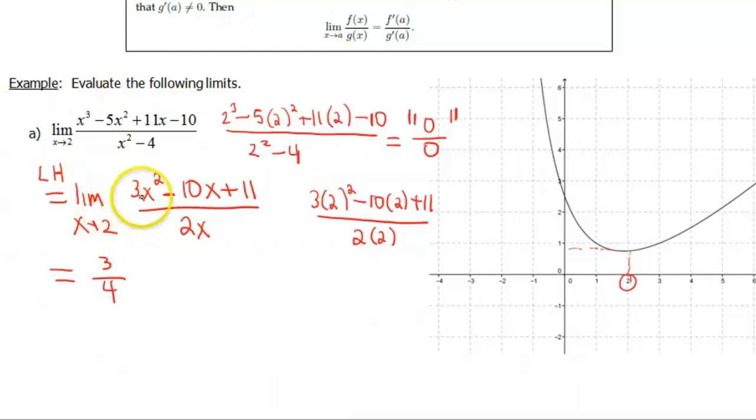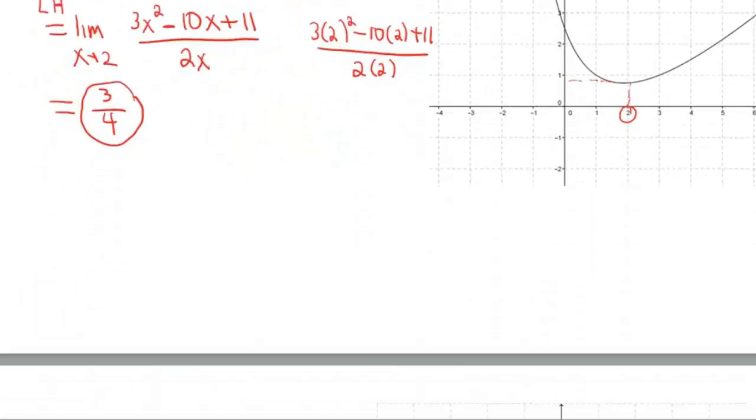You notice my limit went away, because now this is a function that is good at 2. It doesn't have any problems there. And sure enough, our value of something less than 1 but bigger than 1 half was certainly true. So my limit is 3 fourths. Great, let's take a look at another function that's not a polynomial.